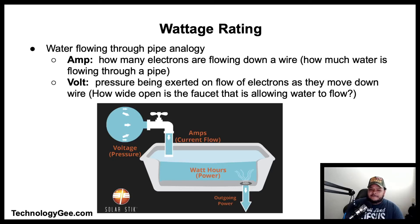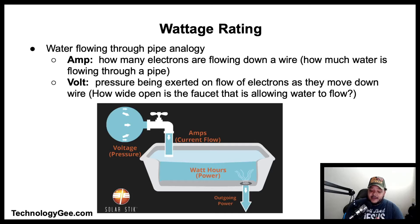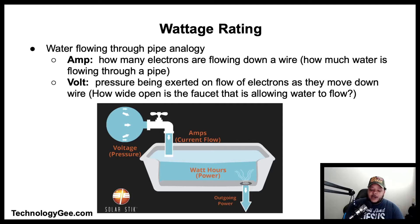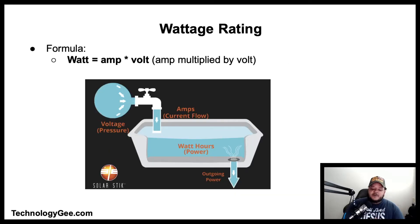One way to visualize this is to think of water flowing through a pipe. An amp is how many electrons are flowing down a wire, or how much water is flowing through a pipe — that is the current. A volt is the pressure being exerted on the flow of electrons as they move down the wire, or how wide the faucet is — whether it is allowing only a drip or the water is just rushing out.